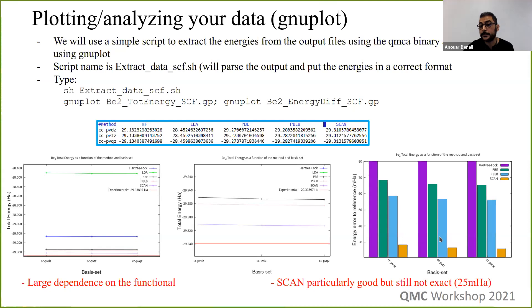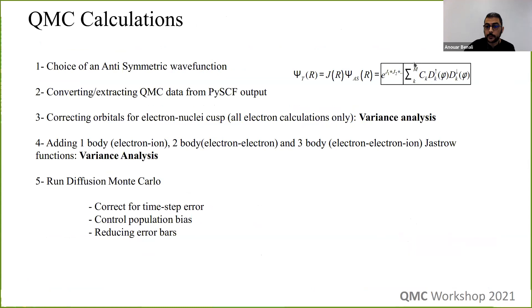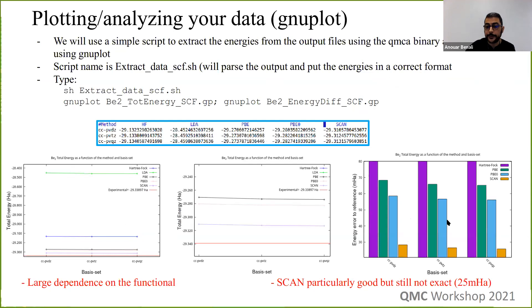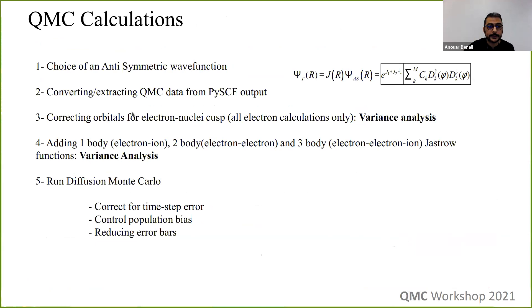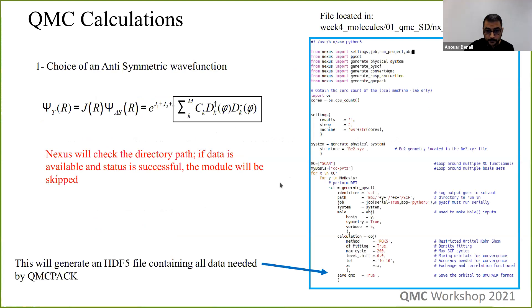Now that we know how to generate the antisymmetric determinant part, we need to build the full trial wave function. The question is which functional to take and does it matter? The steps we'll cover are: converting and extracting data, correcting orbitals for the electron-nuclei cusp, adding one-, two-, and three-body Jastrows, and then running diffusion Monte Carlo. The key point in your Nexus file is 'save_qmc equals true' which generates the QMC data.